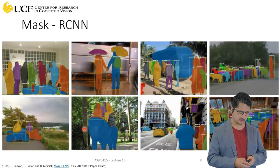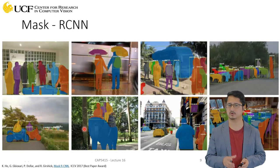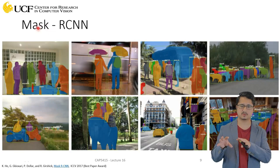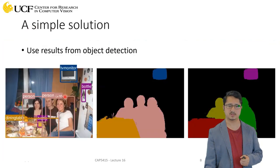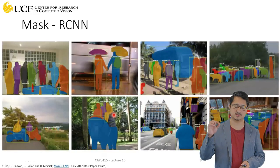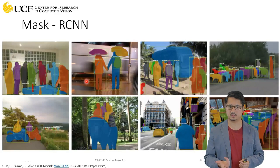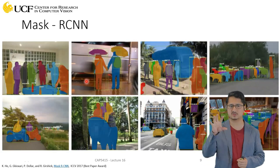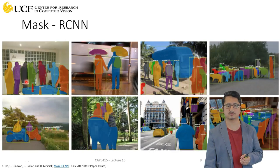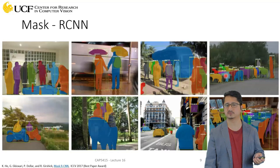We are going to talk about Mask RCNN, which is one of the state-of-the-art algorithms for both object detection and instance segmentation. It's based on the same simple solution we discussed: it does object detection, and once it has the object boundaries, it tries to draw finer boundaries for each instance separately. It's built on top of Faster RCNN and addresses some of the issues in Faster RCNN while also giving segmentation boundaries for each instance.